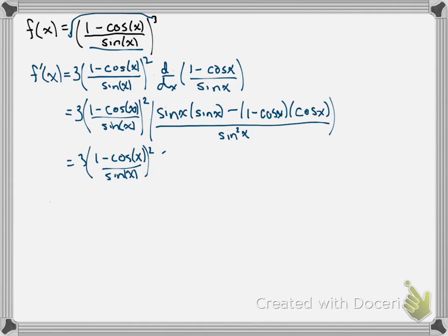Sine x times sine x gives us a sine squared x in the numerator. Now, here, I'm going to distribute this cosine x to these two pieces, but I'm not going to distribute the negative, just to make sure we keep everything clear.